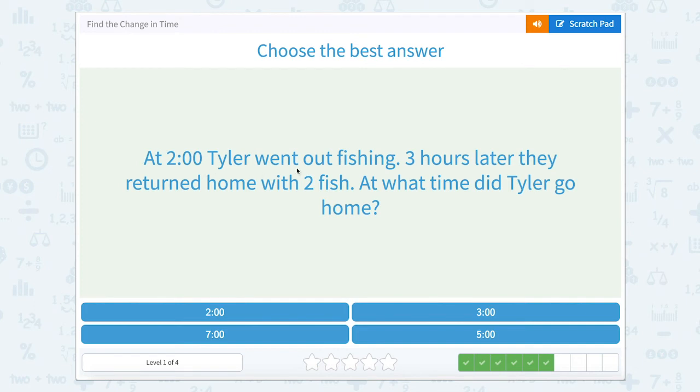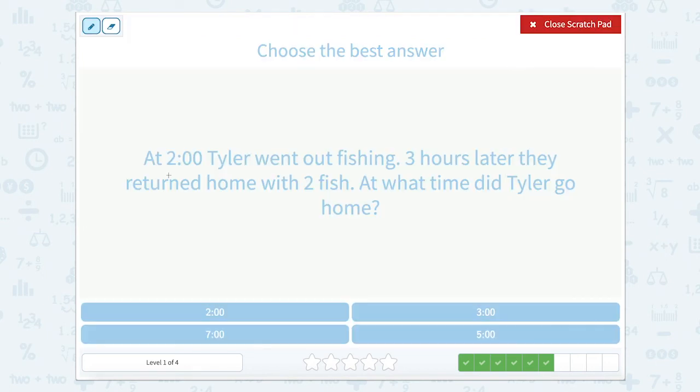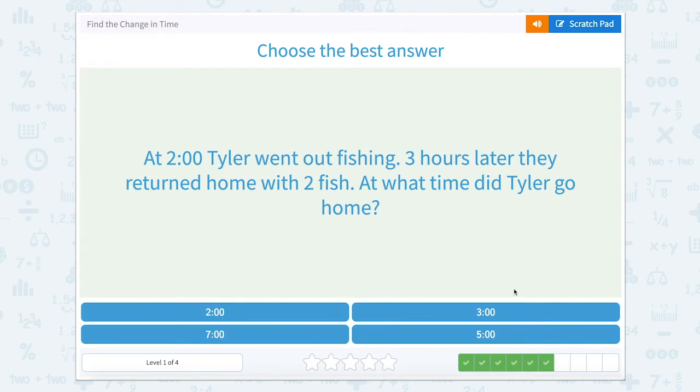At two o'clock, Tyler went out fishing. Three hours later, they returned home with two fish. At what time did Tyler go home? Well, Tyler started at two o'clock and three hours went by. So if you think about this, we can try the way that we just did before as an addition sentence. So two o'clock plus three hours equals what? Well, two o'clock plus three hours equals five o'clock. Now is five o'clock between one and 12? It is, so five o'clock would be okay.